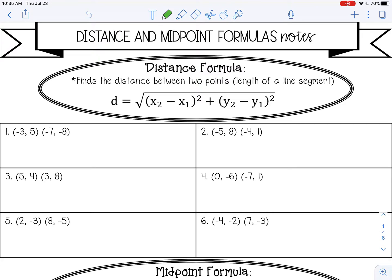So you have the formula below, and you can label your ordered pairs x1, y1, x2, y2, and just substitute it into the formula.